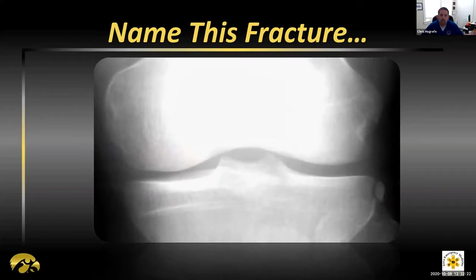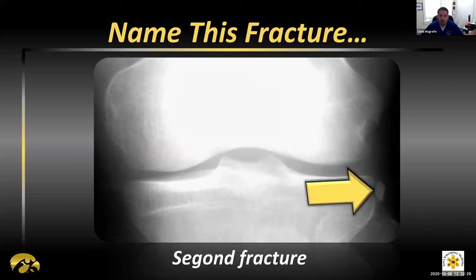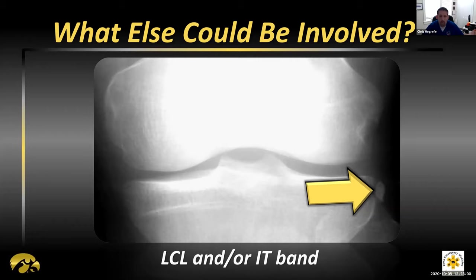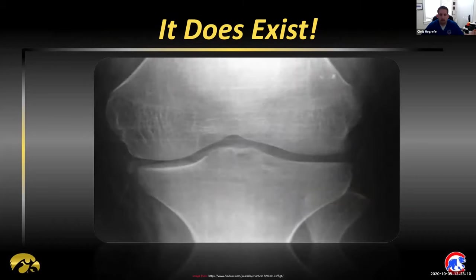Classic board fodder: you spot an abnormality along the lateral aspect of the tibial plateau — that is called a Segond fracture, and more than 90% of the time it is pathognomonic for an ACL tear. There are other structures that can be injured with this finding as well. If you look at the fragment carefully, it misses the joint space, so the lateral meniscus is not likely involved. You do have to worry about LCL and/or IT band injuries, as they pass through and attach right at that area — make sure you assess for those as well.